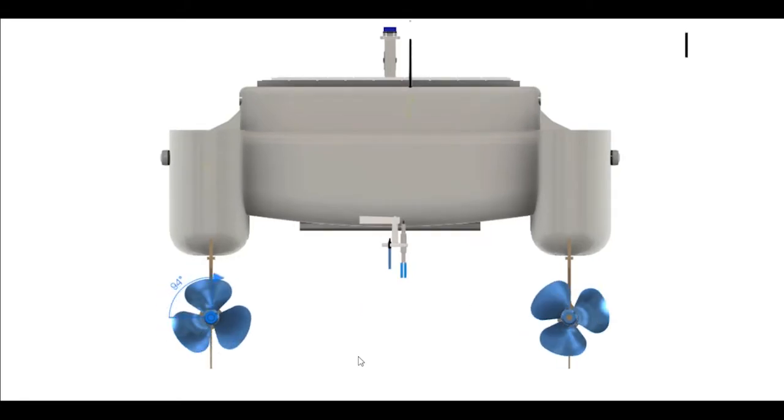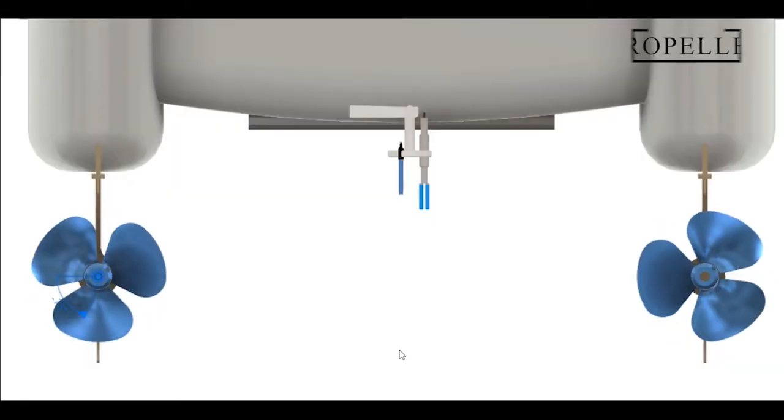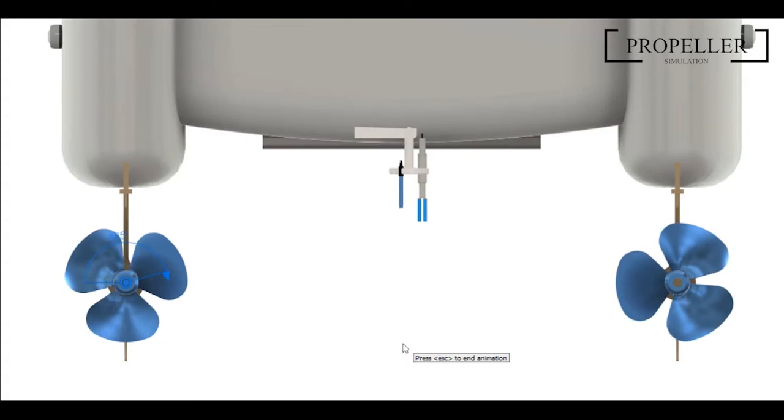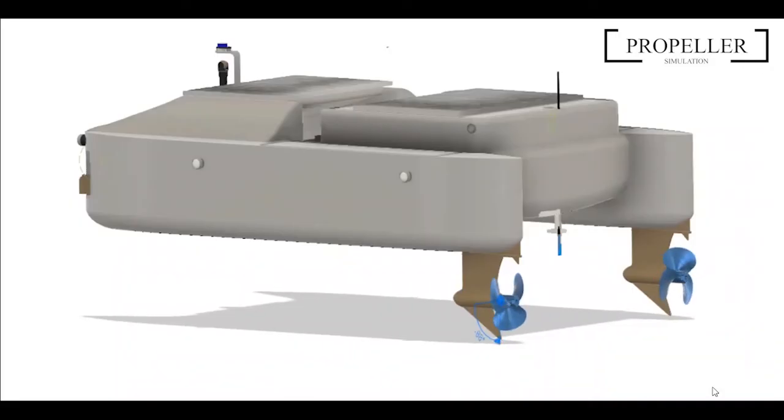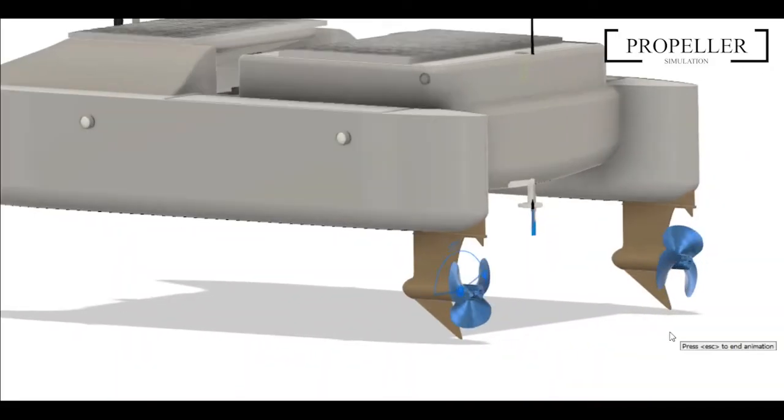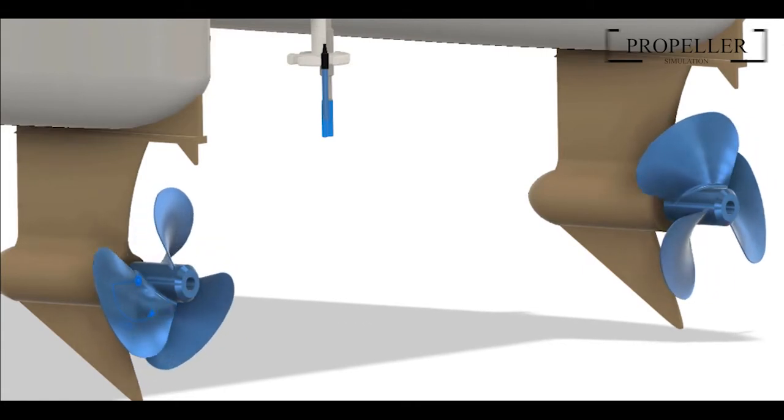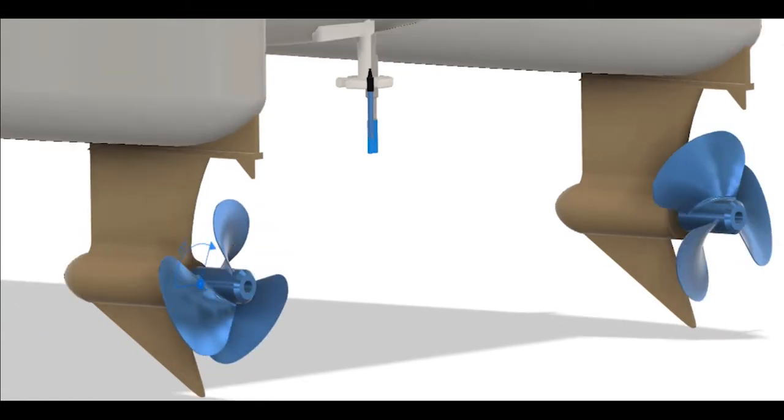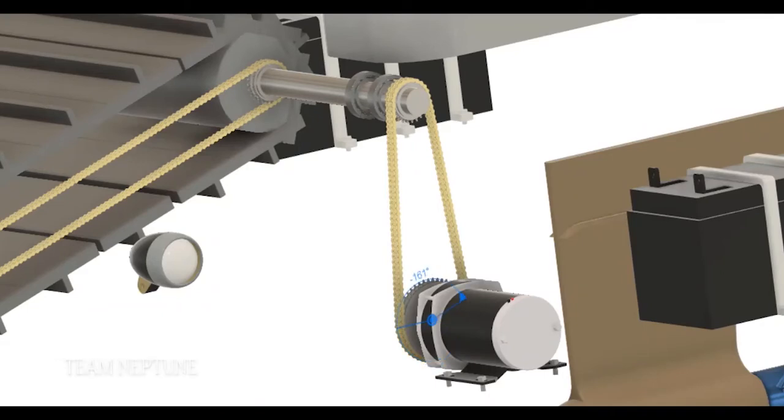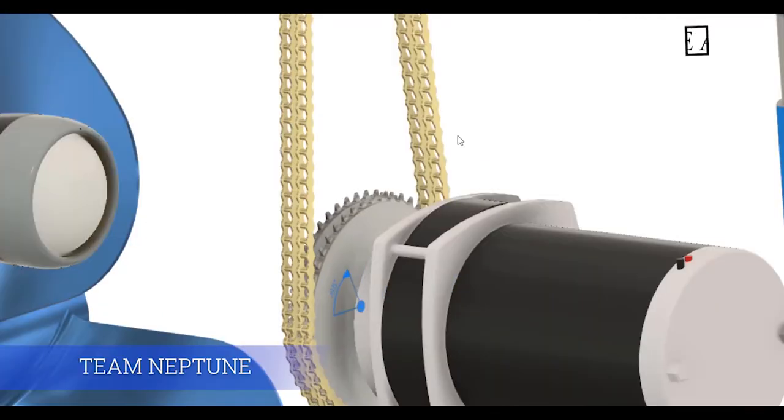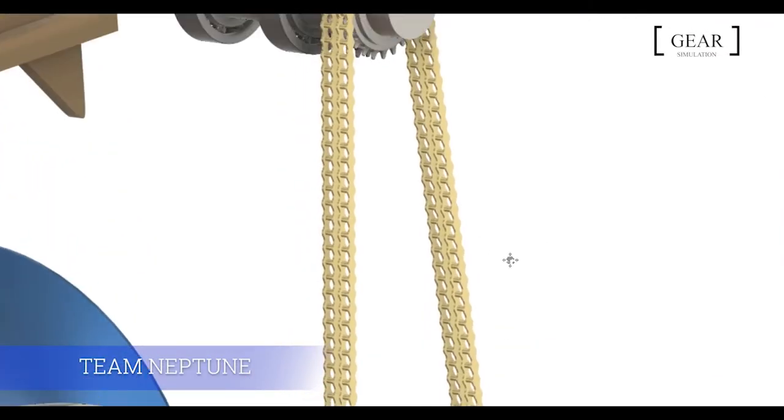The propellers work by turning torque into thrust. They are attached to both the catamaran hulls by connectors. We are also showing the gear simulation, ball bearing motions, and how they are connected to the chain drive.